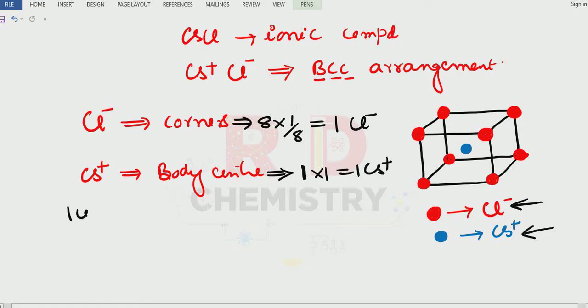Therefore when I say one unit cell, in one unit cell of cesium chloride, how many cesium chloride are there? One cesium chloride formula is there. One cesium chloride formula is there. That means one pair of ions are there. One cation, one anion per unit cell here.